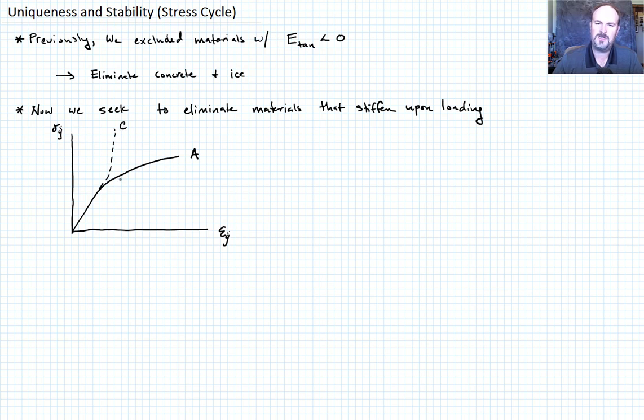The material is going to load up and then this would be our typical strain hardening material that we had denoted previously as A. And now we want to look at what about a material that stiffens as we go up, we'll call that material C.